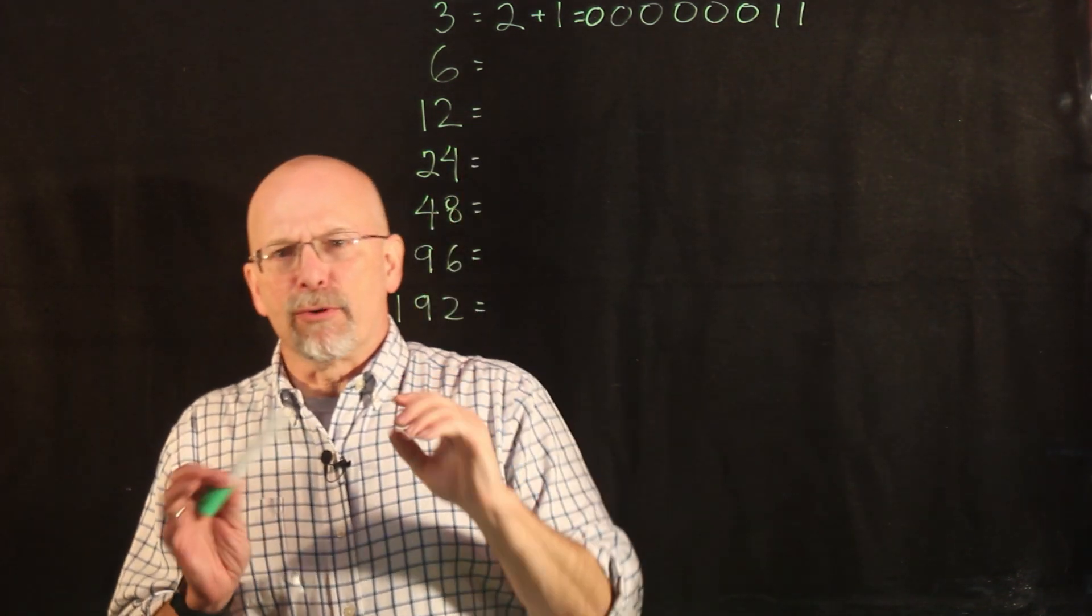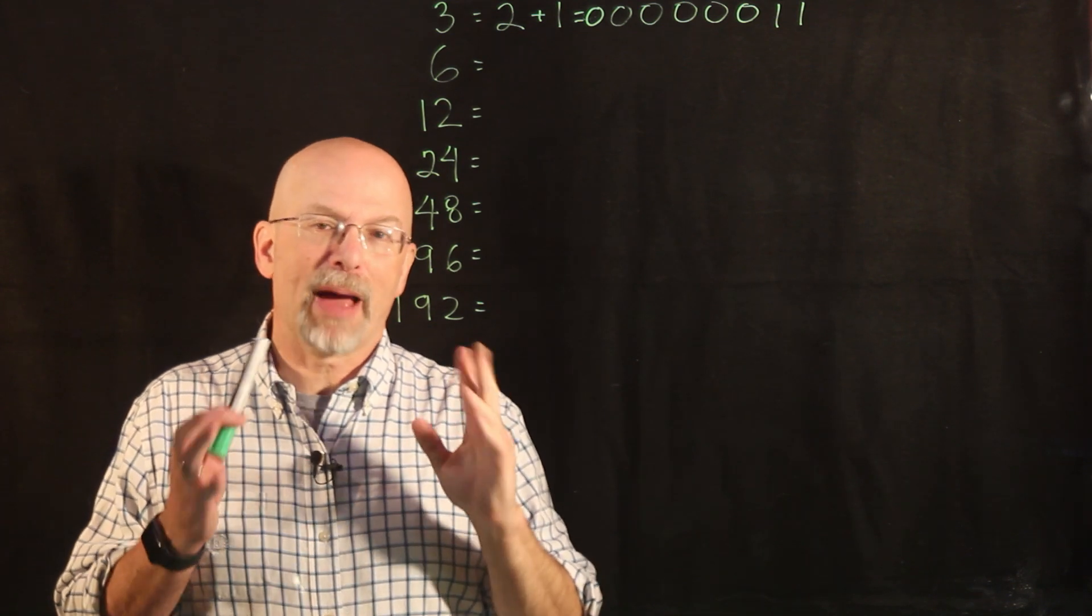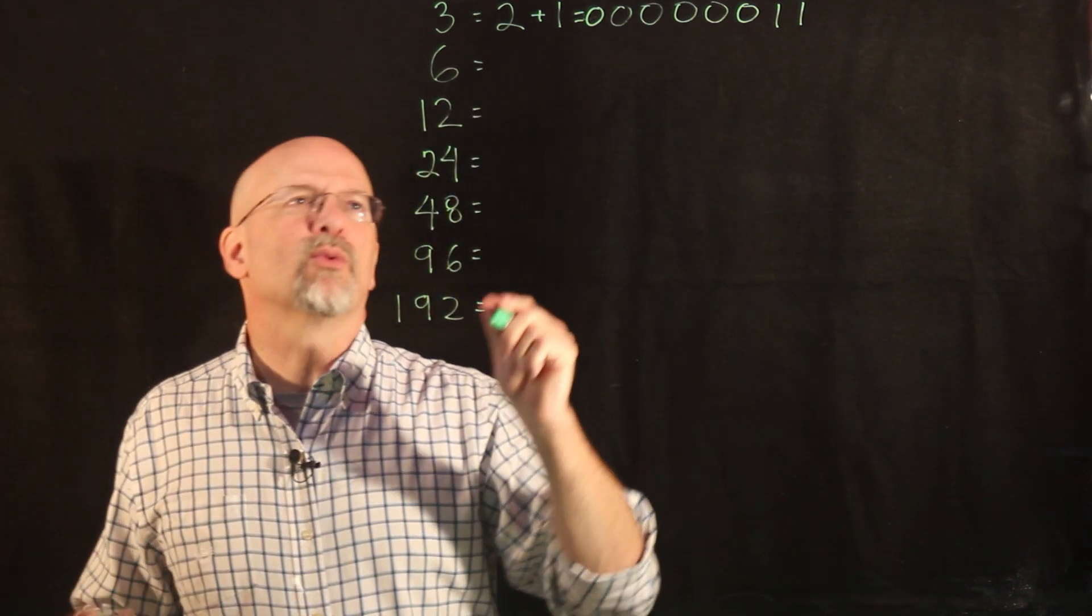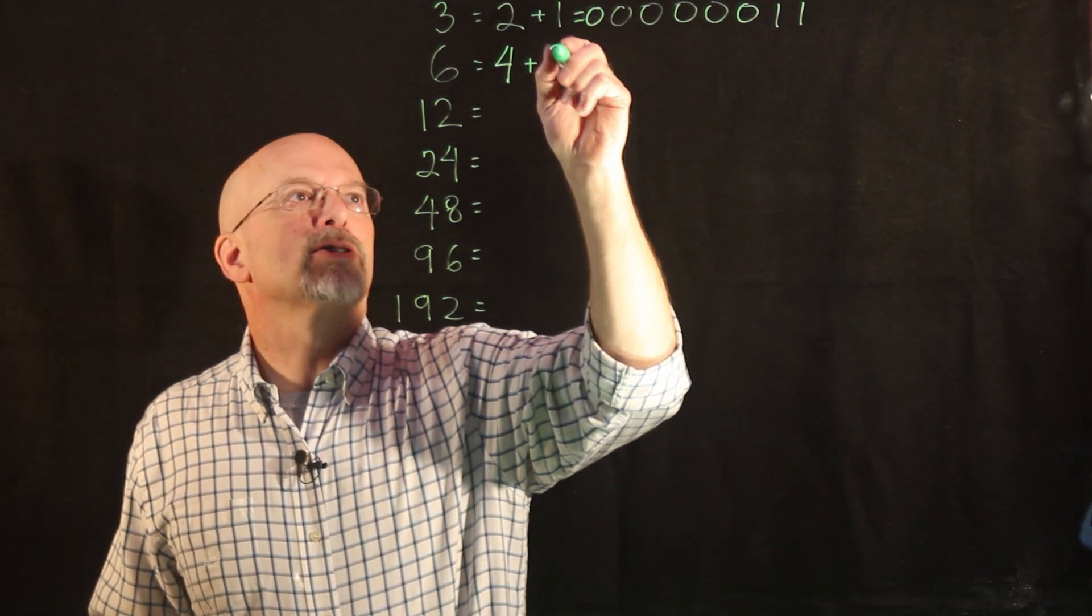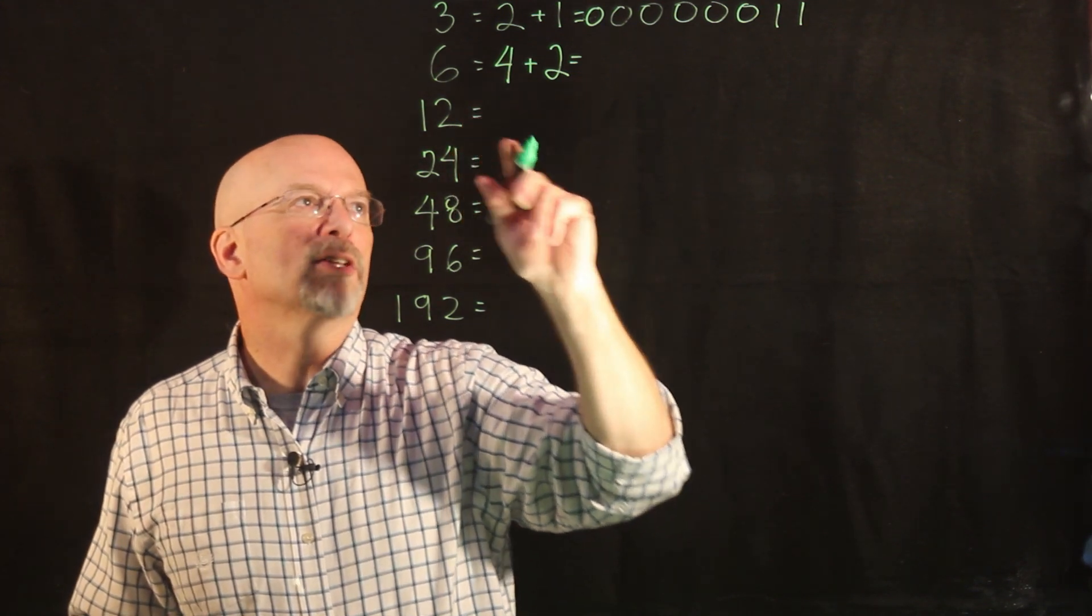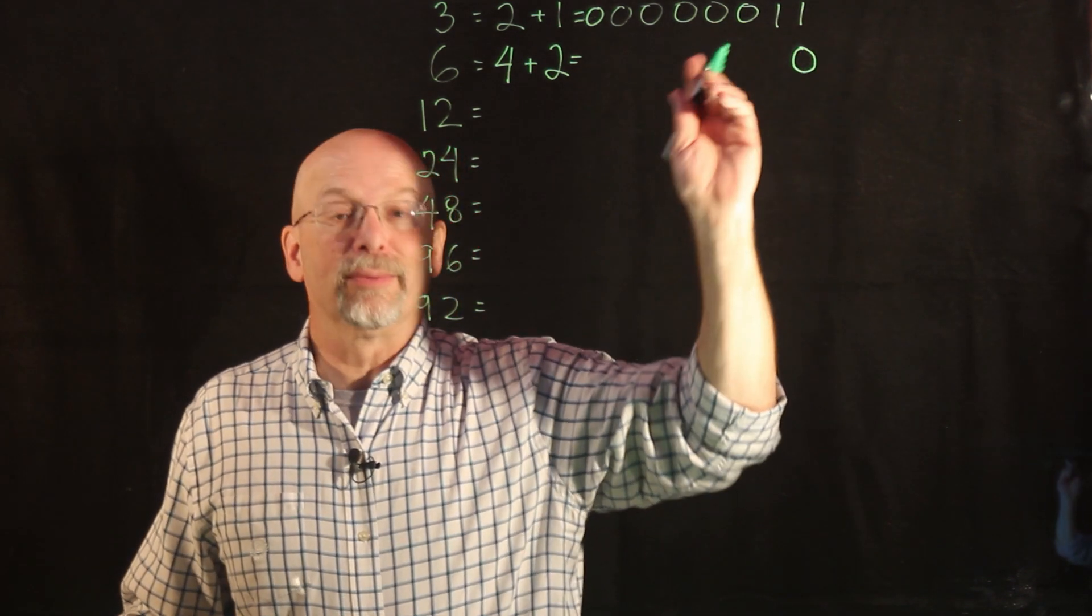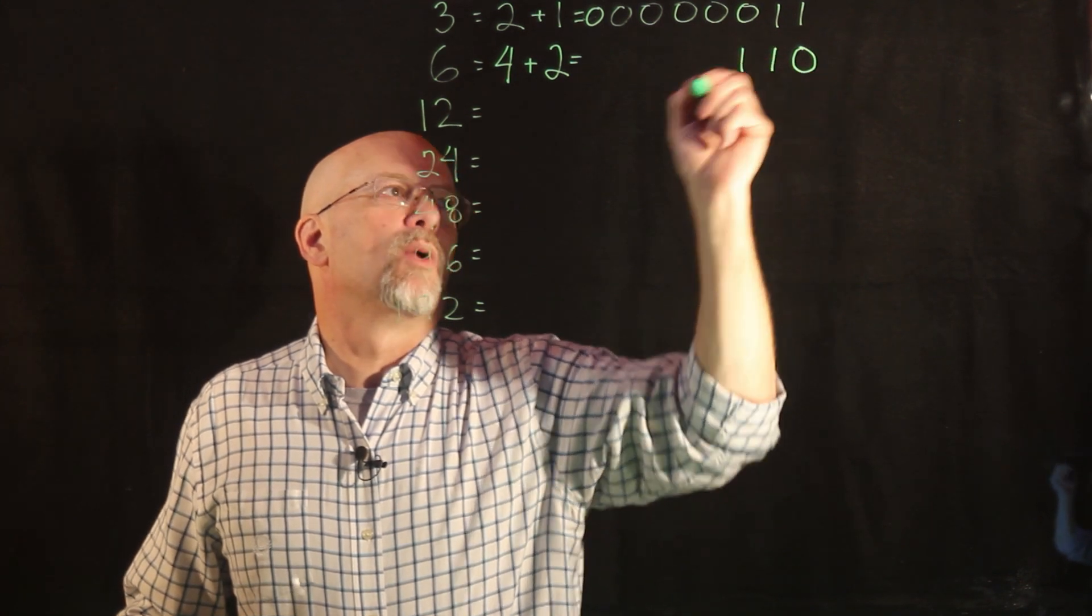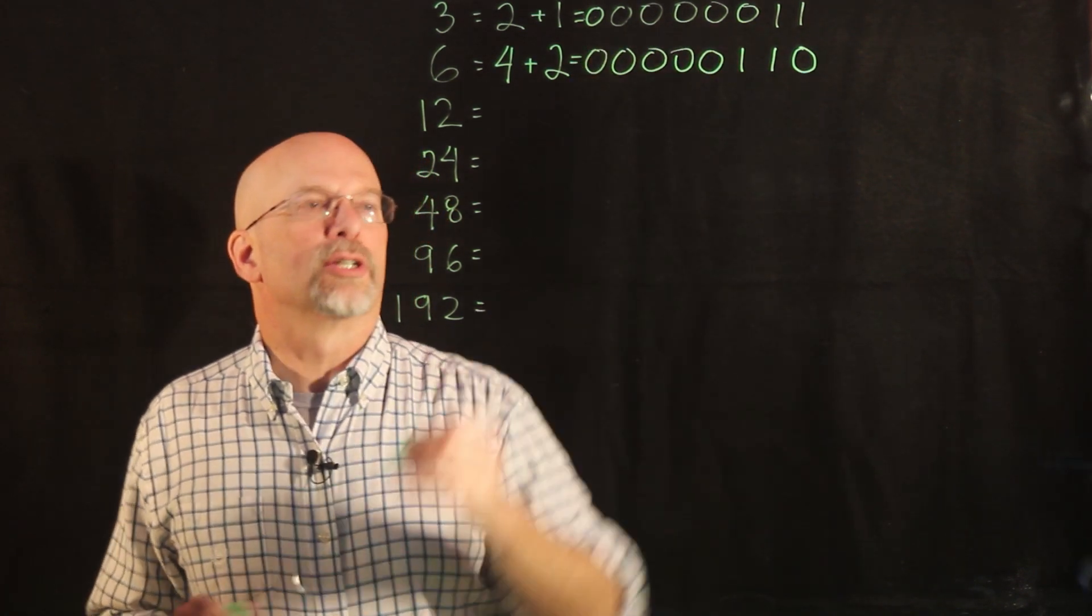Six, still not really a big deal. That is four, otherwise known as two squared, plus two. And so we have a one in the two to the one position and a one in the two to the two position. The least significant bit, two to the zero, we have a zero, and then we have zeros in all the remaining positions.